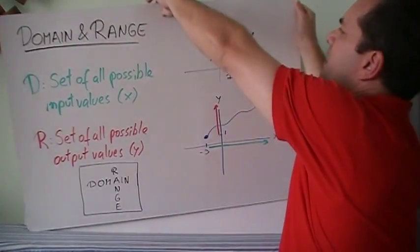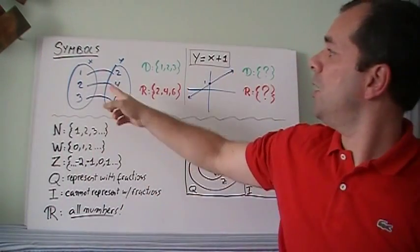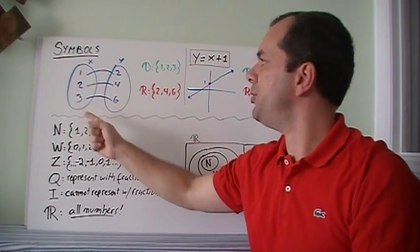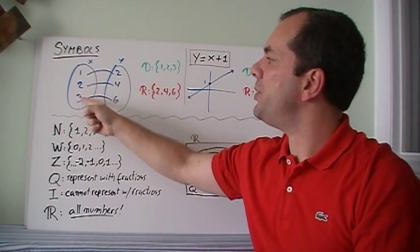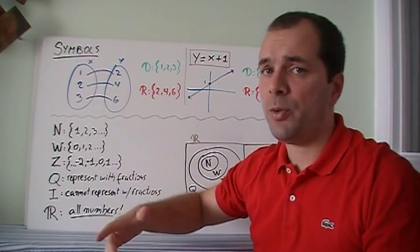So what are some of those symbols that we're talking about? Well, if they give us a Venn diagram like this, this would be a simple thing for us to do because my input seems to be 1, 2, and 3, and my output seems to be 2, 4, and 6. So how do I say it?